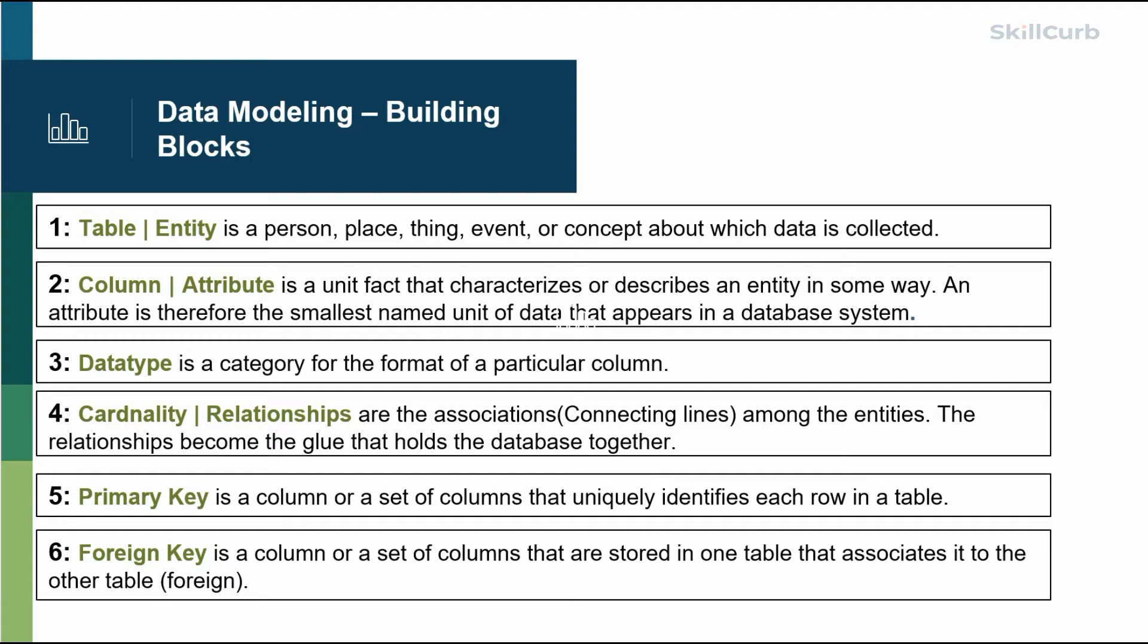To collect data for. Second, column or attribute - these are just characteristics of the table. So if you want to collect data for the customer, the customer being the table, the columns for the customer table can be first name, last name,